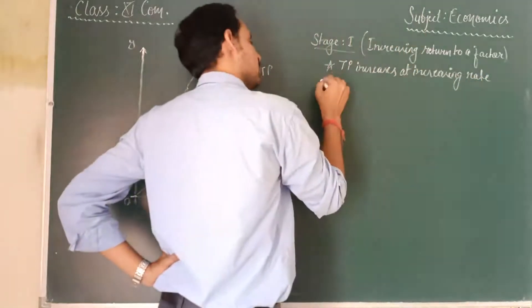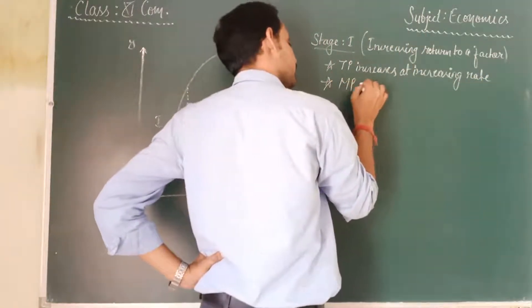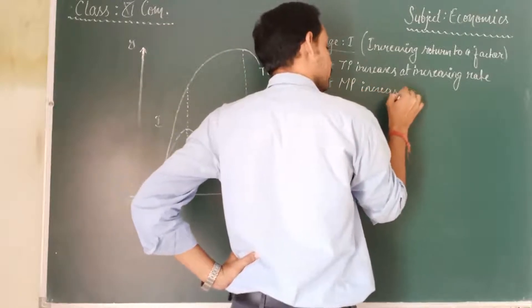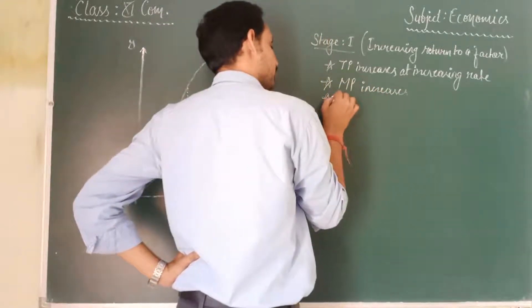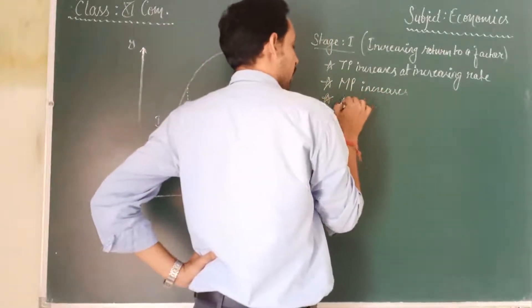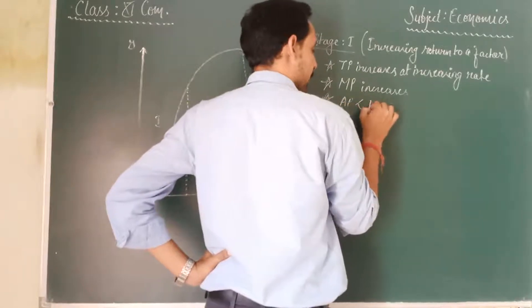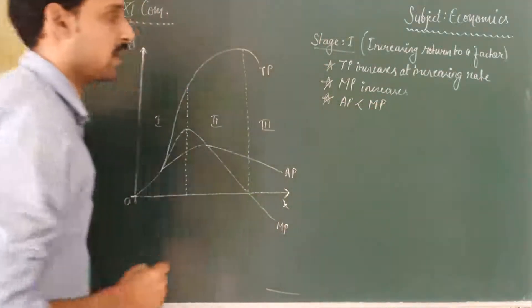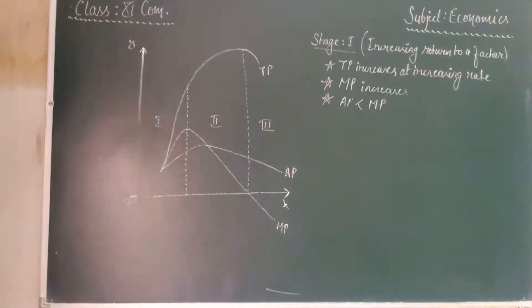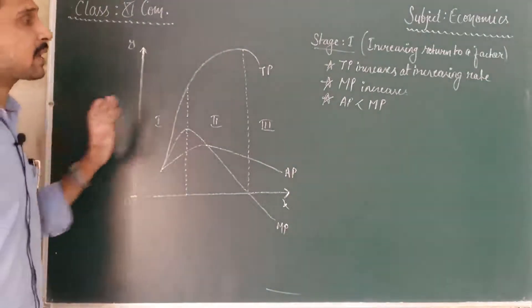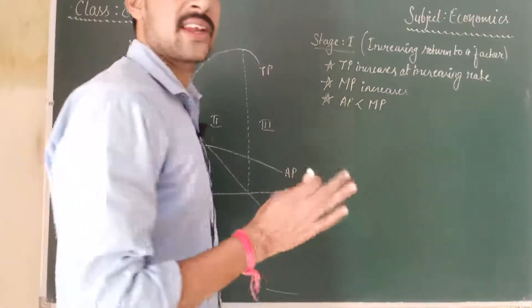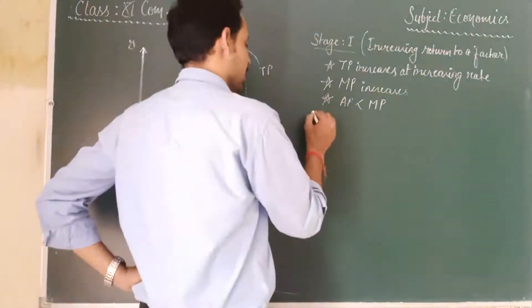Second, MP increases. And AP is less than MP — the Average Product is less than the Marginal Product. Now the question is why does this happen? What are the reasons — the causes — for Increasing Returns to a Factor?